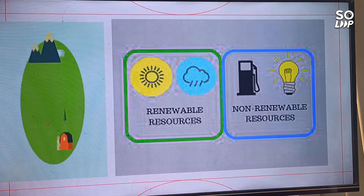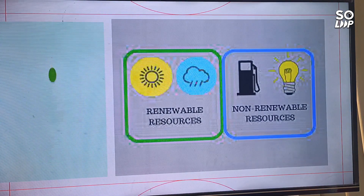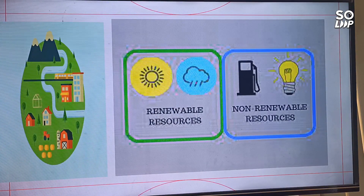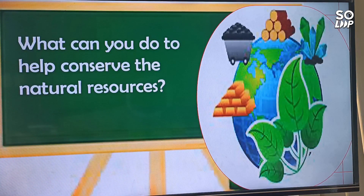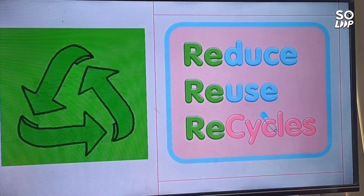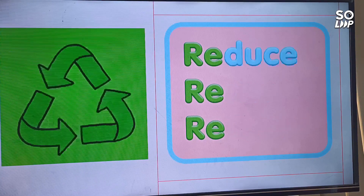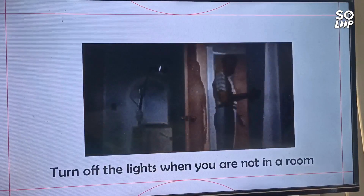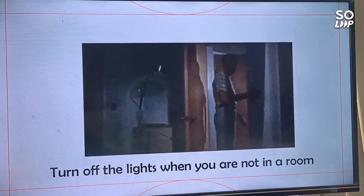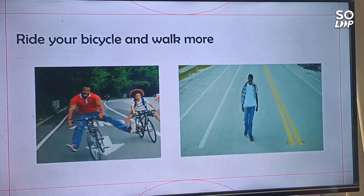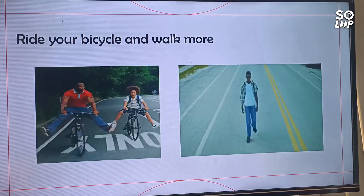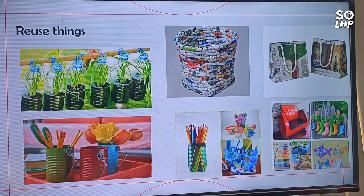Now, after knowing the differences between renewable and non-renewable resources, it is also important to know how you can help conserve natural resources. Can you think of ways on how you can help conserve them? Correct! You can reduce, reuse, and recycle. For example, you can turn off the lights when you are not in a room — this will reduce the use of fossil fuel used to make electricity. You can ride your bicycle and walk more to reduce the amount of gasoline used. You can reuse things like plastic jugs, jars, paper, and bags. Each time you reuse something, you conserve the natural resources that would have been used to make new ones. Remember, most of our natural resources are limited, so we must use them wisely.